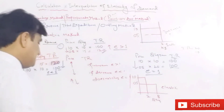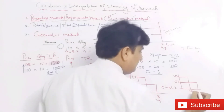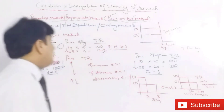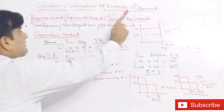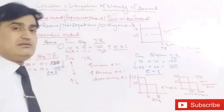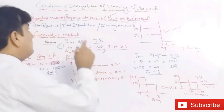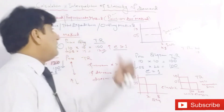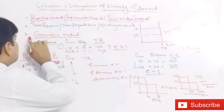When the demand is unit elastic — for example, when the price decreases from 10 to 5 and the quantity demanded increases from 100 to 200 — the total revenue will not change; it remains the same. So that is all about the second method: the total revenue, total expenditure, or outlay method. In the first part, we covered the percentage or proportional method through point and arc methods, where the arc method was preferred because moving from A to B or B to A gives the same result.